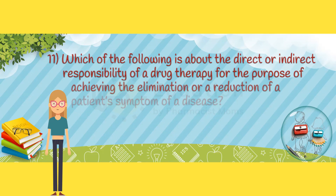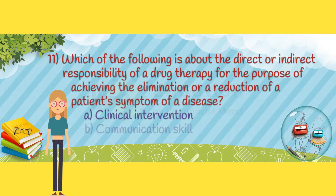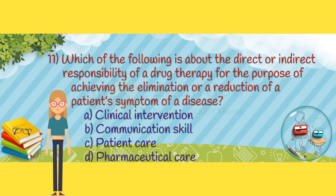Question 11. Which of the following is about the direct or indirect responsibility of a drug therapy for the purpose of achieving the elimination or a reduction of a patient's symptom of a disease? Option A: clinical intervention. Option B: communication skill. Option C: patient care. Option D: pharmaceutical care.